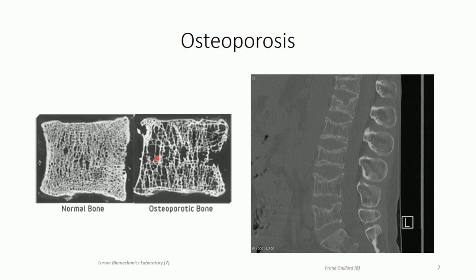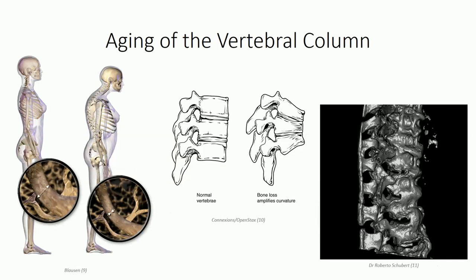As osteoporosis progresses, there is a selective loss of horizontal trabeculae, resulting in collapse of the inner core and a characteristic biconcave shape to the vertebrae. Radiographically, this results in a visible vertical striation pattern due to the selective sparing of vertical trabeculae. The central collapse means more weight is supported by the peripheral compact bone collar over time, gradually resulting in bowing of the collar and the formation of osteophytes, more commonly known as bone spurs. Posteriorly projecting osteophytes are particularly troublesome as they may compress neural structures.